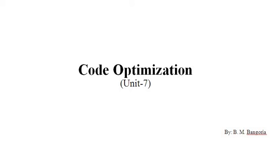In today's lecture, I will discuss about code optimization, which is your unit number 7. First, what is code optimization — code optimization is the process to optimize or minimize the given code. There is no any change from original code after the optimization. In this video, I will discuss about code optimization techniques, peephole optimization, and global data flow analysis.